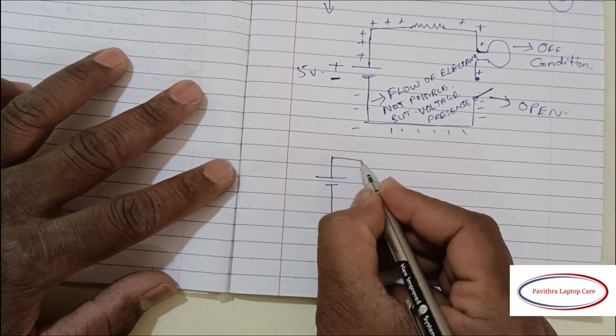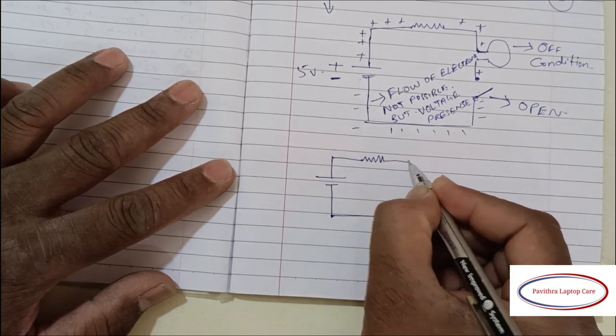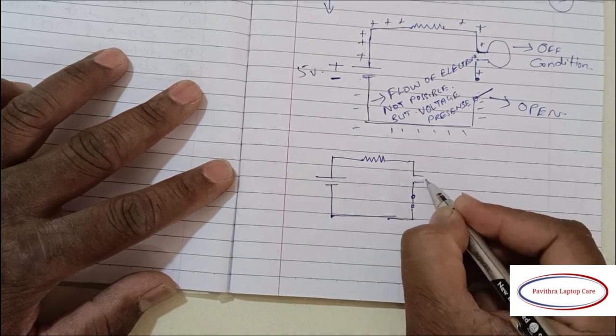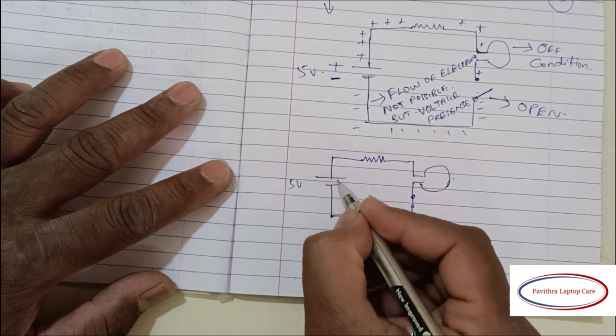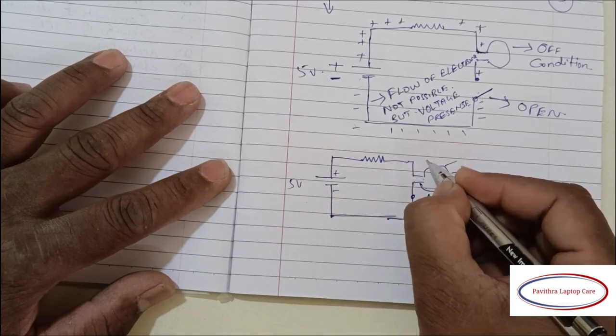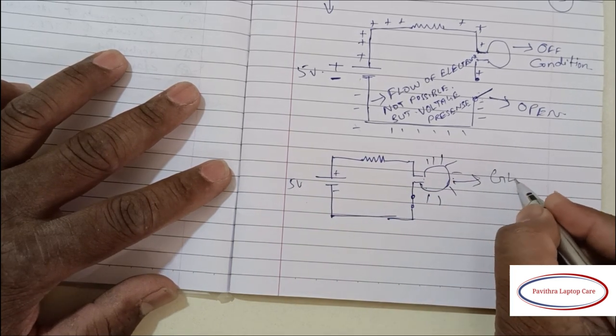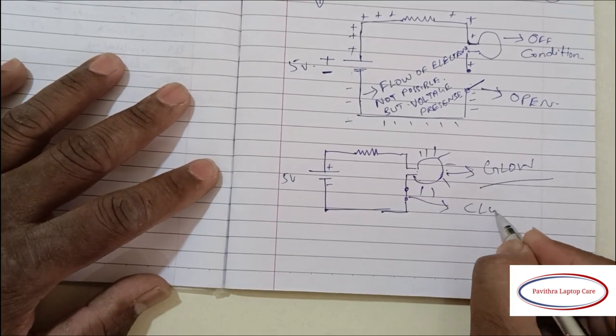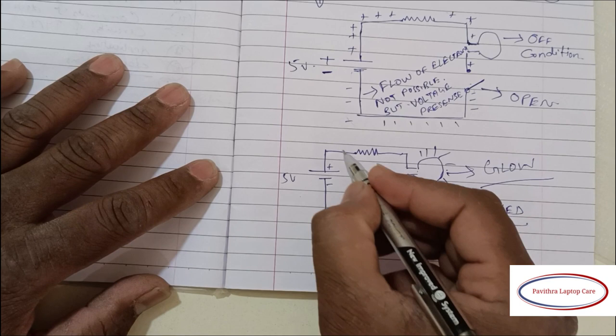I will draw one more circuit. The same bulb is connected through the resistor to the source. And in this case, the switch will be in closed condition.